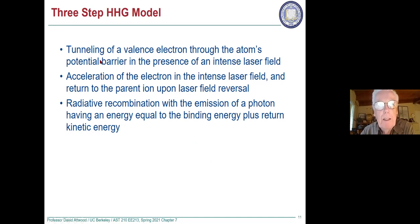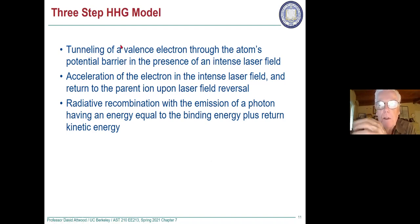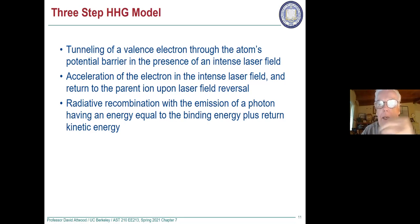The first step is that with the incident intense laser field, with one of the atoms immersed in this field, the electric field of the laser lowers the potential binding the electrons to the atom and they can tunnel through. The laser field should be just enough to lower the barrier to make it easier for electrons to get out, but not too strong a laser field.